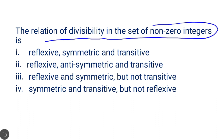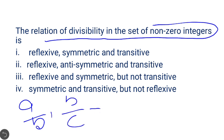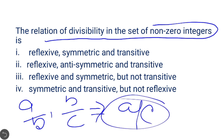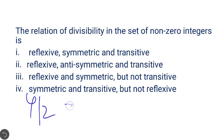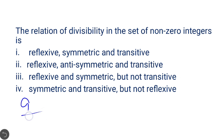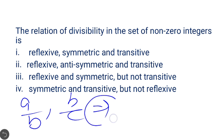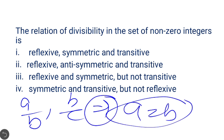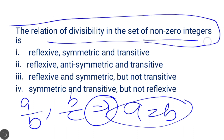Next question: the relation of divisibility in the set of non-zero integers. It satisfies transitivity: if a is divisible by b and b is divisible by c, then a is divisible by c. It is not symmetric: for example, 4 is divisible by 2 but 2 is not divisible by 4. It is anti-symmetric: if a is divisible by b and b is divisible by a, then a equals b. It is also reflexive on non-zero integers. The correct answer is option 2: reflexive, anti-symmetric, and transitive.